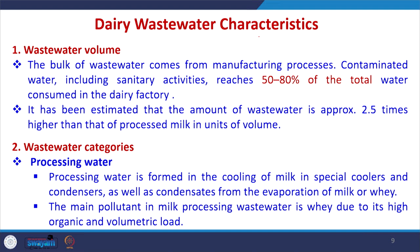The bulk of wastewater comes from manufacturing processes. Contaminated water including sanitary activities reaches 50 to 80 percent of the total water consumed in the dairy factory, and it has been estimated that the amount of wastewater is approximately 2.5 times higher than the milk processed in terms of volume. Processing water is formed in the cooling of milk in special coolers and condensers, as well as condensates from evaporation. The main pollutant is whey, due to which there is a high organic volumetric load.